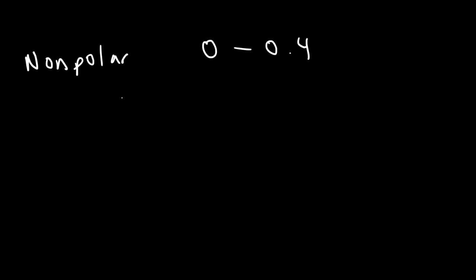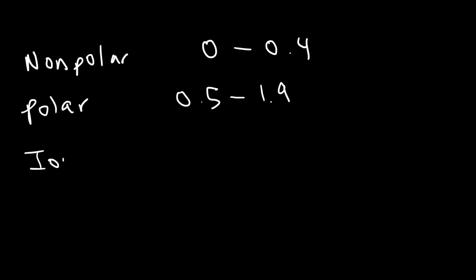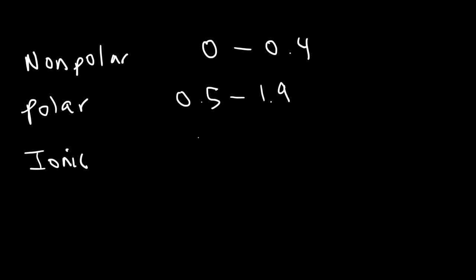You can characterize bonds based on the electronegativity difference between atoms. For a non-polar bond, the electronegativity difference is typically between 0 and 0.4. For a polar covalent bond, the difference is about 0.5 to 1.9. For an ionic bond, it's greater than 1.9. So if it's non-polar you could say the difference is less than 0.5.